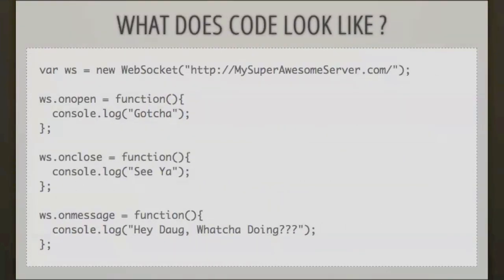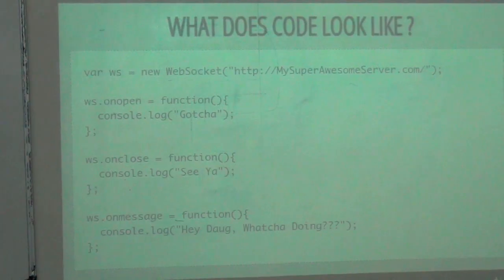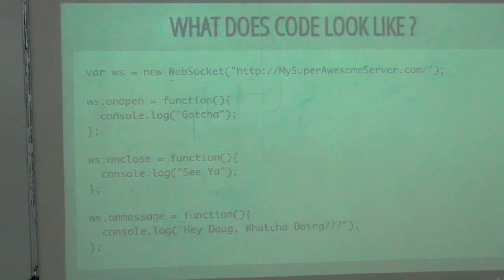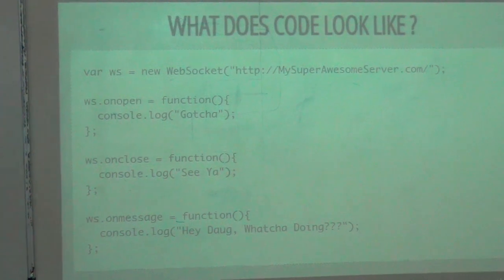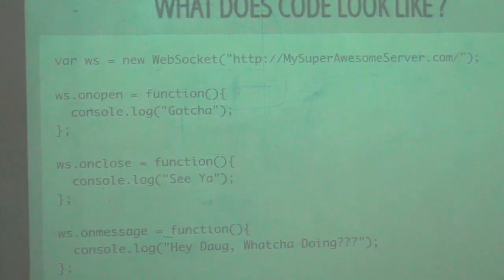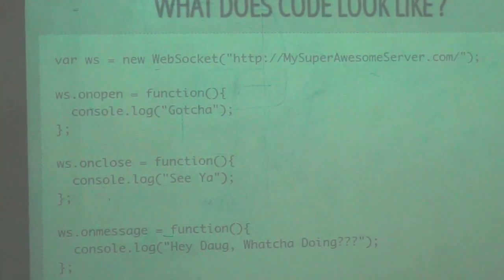What does the code look like? You create a new instance of the WebSocket, specify where to connect, then define what happens when the connection opens, when it closes, and when you receive a message. That's pretty much the whole interface defined for WebSockets.